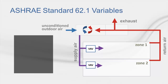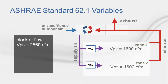The system's design air flows correspond to the following variables in the 62.1 calculation. As shown in the system schematic, the system block air flow corresponds to the variable V sub PS, the zone's design air flow corresponds to V sub PZ, and the minimum stop air flow corresponds to V sub PZ min.